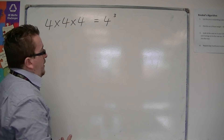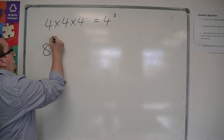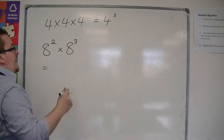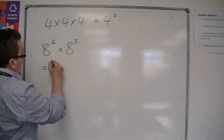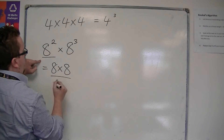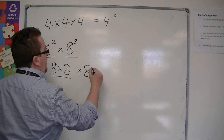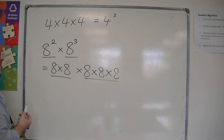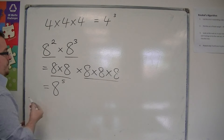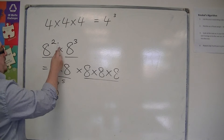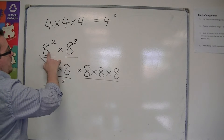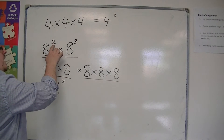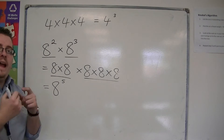You could also be looking at things like 8 squared times 8 cubed. What would that be? Well, 8 squared is 8 times 8, and 8 cubed is 8 times 8 times 8. So if I multiply all of these 8s together, I get 8 to the 5. When you multiply two numbers together where the base number is the same, 2 plus 3 is 5 — the powers get added together.